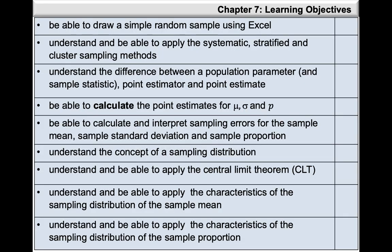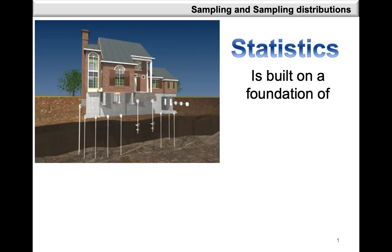In this video, we're going to take a look at how to draw a simple random sample using Excel and how to apply the systematic, stratified, and cluster sampling methods. Statistics is built on a foundation of randomness, which implies that we make use of the lack of predictability or the lack of a pattern in the events that we observe so that they can give us a good representation of the population behavior.